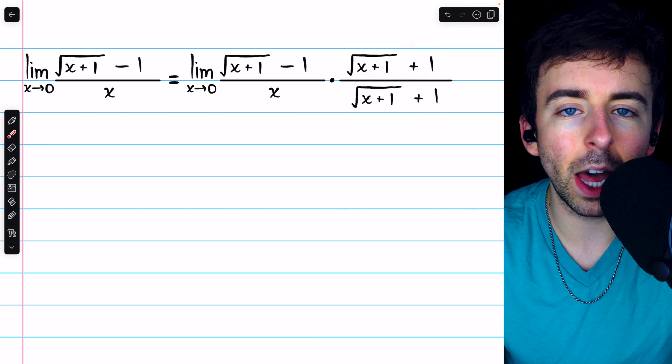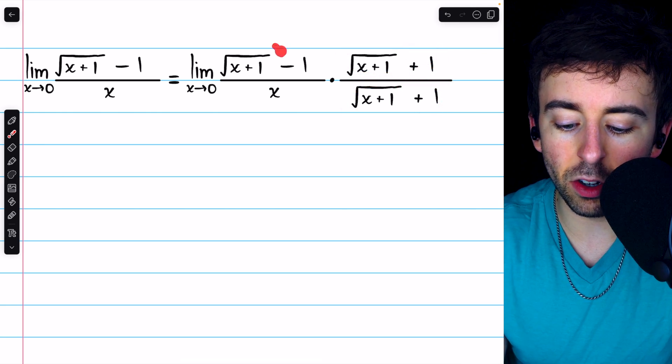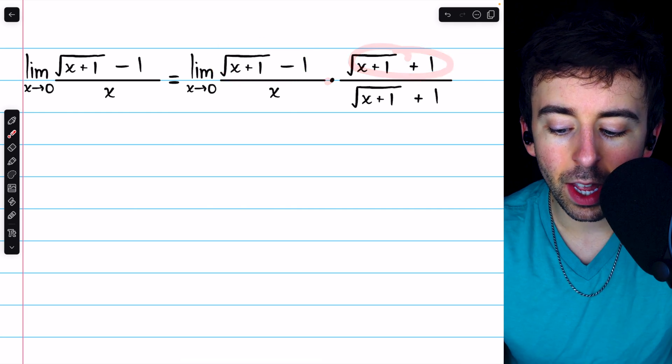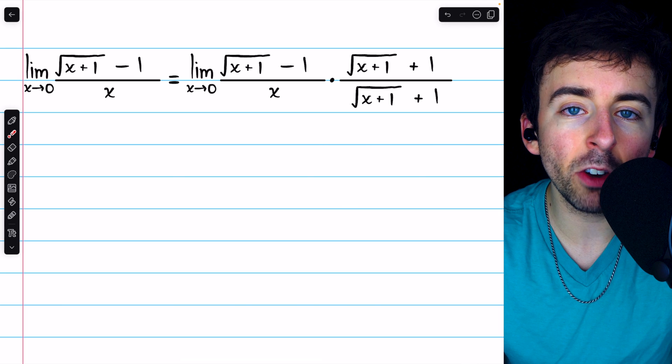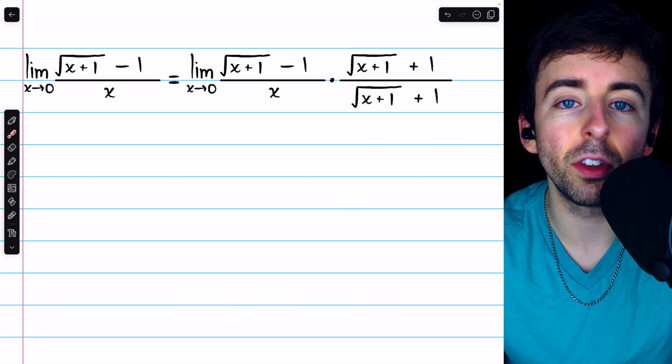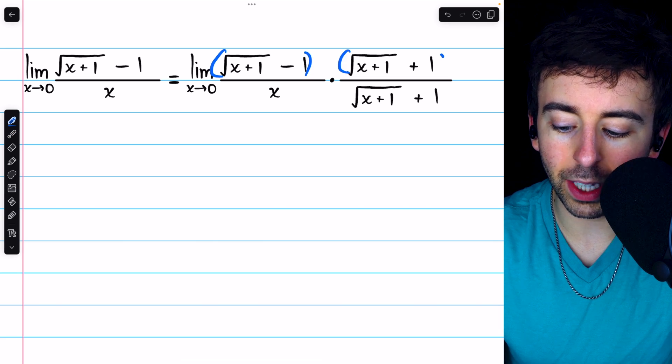So we're really just multiplying by 1, but notice in the numerator, we've got this term multiplied by its conjugate, and how multiplying by a conjugate works is that we're just going to end up with the difference of the squares. If we were to do out this multiplication,